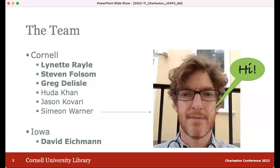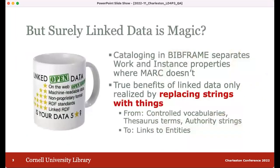Linked data is pretty cool and there are lots of good reasons it should be the basis of library cataloging. However, it is not magic. Cataloging in BibFrame the way we catalog in MARC, or simply migrating records to the new format, doesn't gain very much on its own. It separates work and instance properties in a logical way that MARC fails to do, but not much more. To realize improved discovery and metadata maintainability, one needs to replace strings with things.